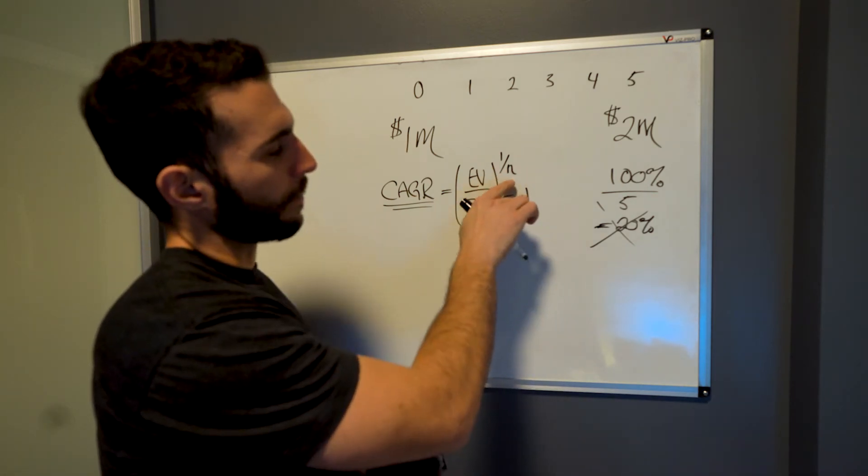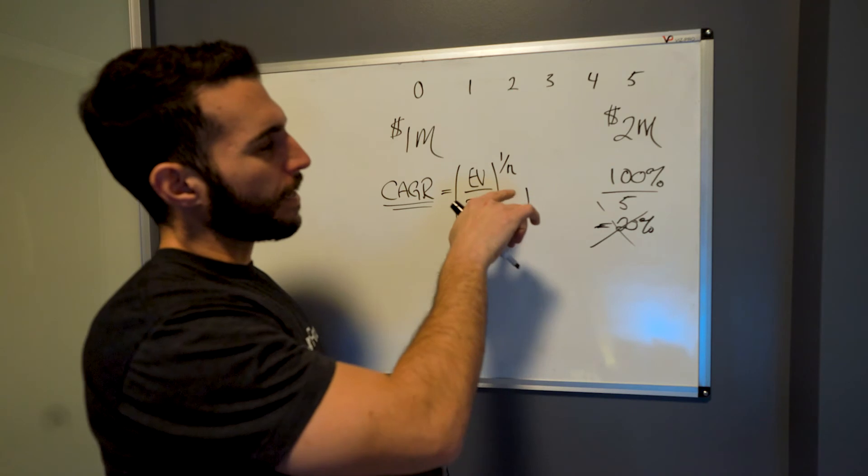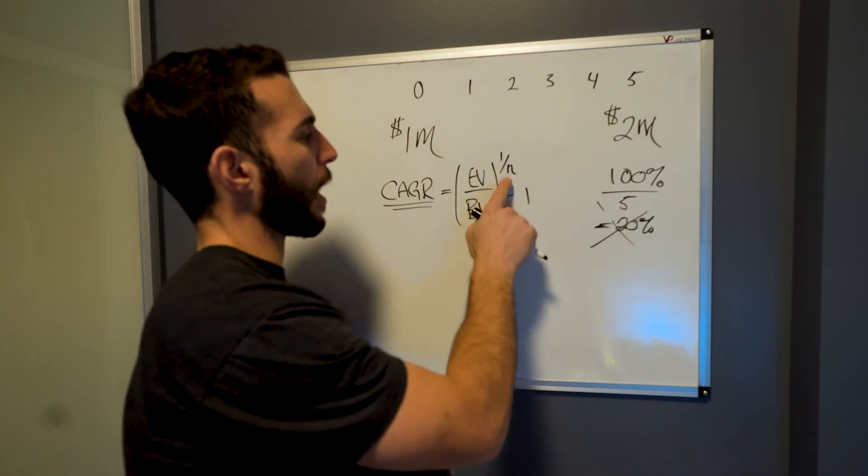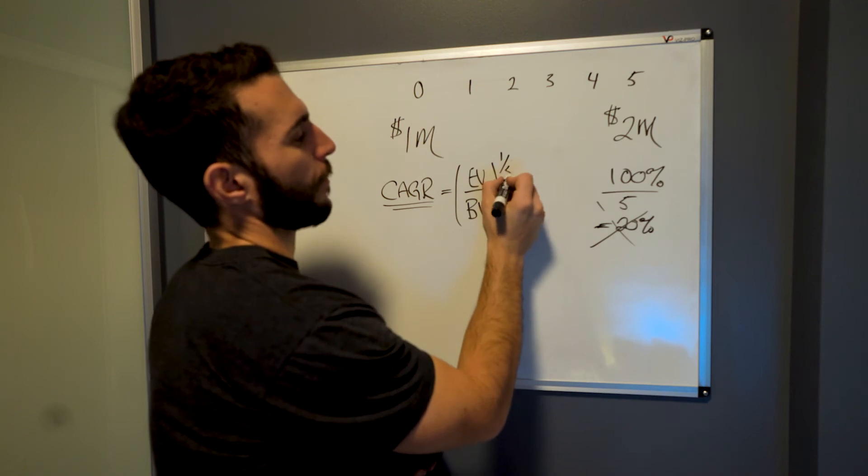With the N here, that's an N in case it wasn't obvious, probably wasn't. The N is denoting the time periods. In this case, we're doing years. So it's five. So let's put a five in there.